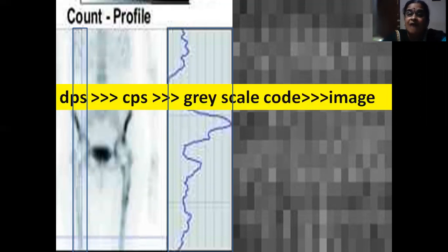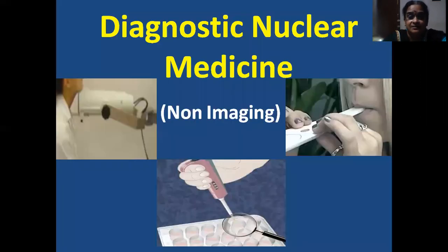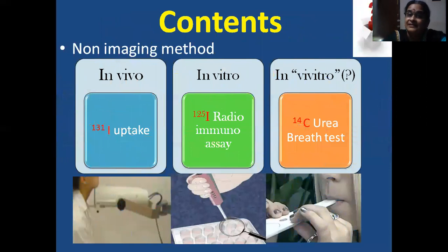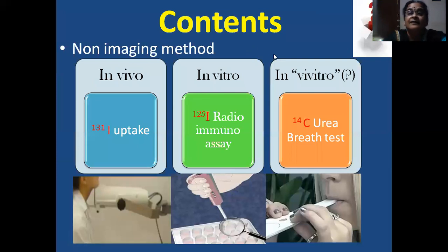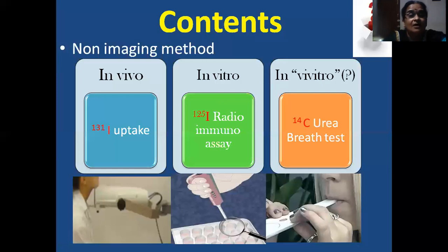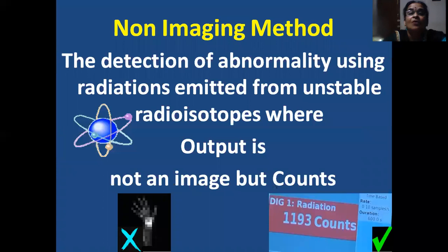If we want quantification, the image is of no use — we need the count. So the topic for today is diagnostic nuclear medicine using non-imaging methods. Different methods include: in vivo, with the example being iodine-131 uptake using the probe method; in vitro, with I-125 radioimmunoassay for biochemical and biomolecular estimation using a radiotracer; and in vivitro — a new term I've coined — with C-14 urea breath test as the example.